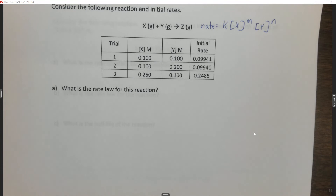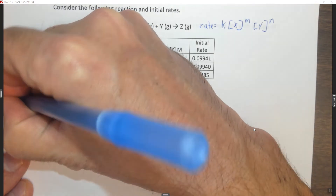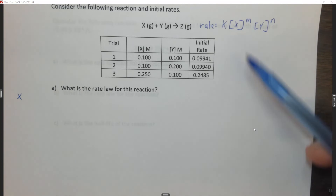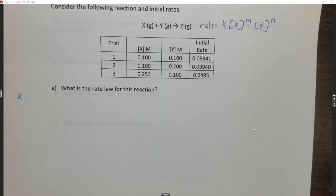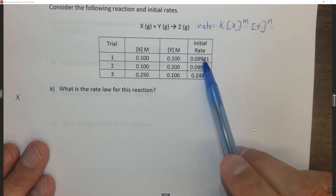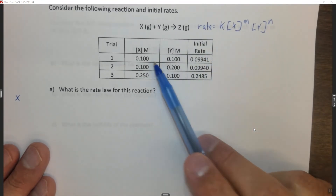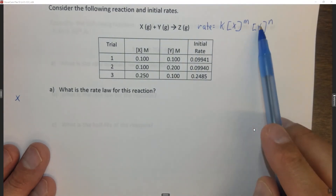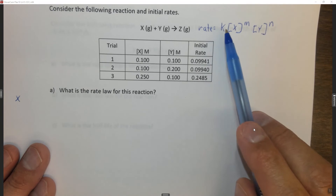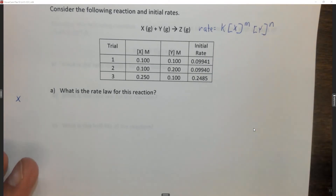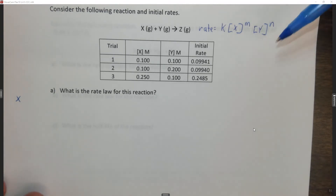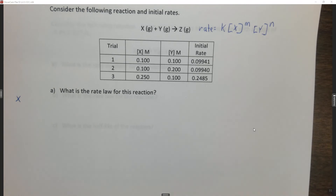It doesn't make any difference which one you determine first. I'm going to determine X first because it comes first, but feel free to determine Y first if you prefer. We have an algebra problem with a lot of variables. We know the rate, but we don't know K, M, or N. Because of that we have to do a math trick: write the rate law twice and then divide them, which allows unlike terms to cancel out. But you have to do it in a very strategic way.